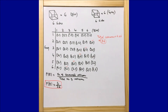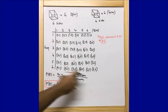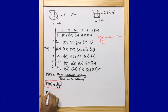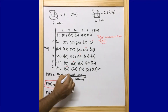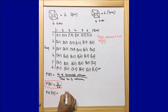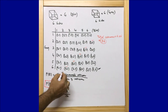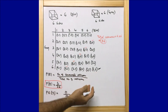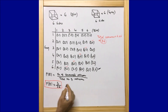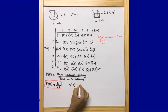Now let us look into the second part: what is the probability that the sum of the two numbers appearing on the top of the dice is 13? We will never get 13, because the highest possible sum from two dice is six plus six, which is 12. So the probability of getting 13 is equal to 0 upon 36.